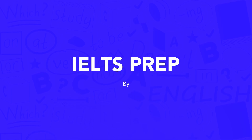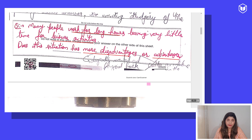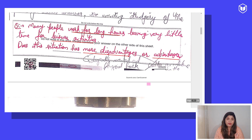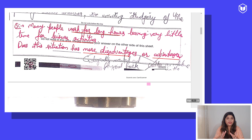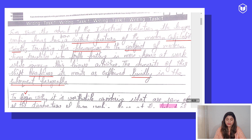The essay question is: 'Many people work for long hours leaving very little time for leisure activities. Does this situation have more advantages or disadvantages?' So far we have seen that the student has written the essay beautifully — completely on topic, excellent vocabulary, of course with minor slips in grammar and some words repeated or not quite in context. These were the minor errors noticed, and the student was a bit shaky with the example, but otherwise everything was in place.